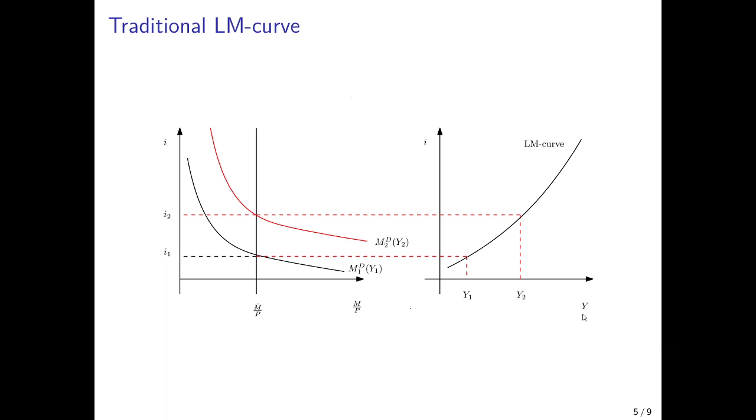Why is it upward sloping? Well, because higher incomes would lead to higher transaction needs and that would require a higher interest rate in order for the central bank not to have to increase its money supply. So if money supply and the equilibrium money holdings should stay constant, then the increase in income must be associated with an increase in the interest rate. And that's actually the defining feature of an LM curve. So it's upward sloping.